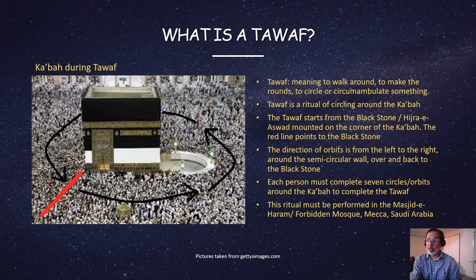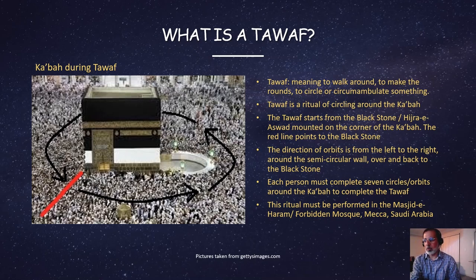The word Tawaf means to walk around or to make the rounds, to circle or circumambulate something. In our context, Tawaf is a ritual of circling around the Kaaba. The Tawaf starts from the Black Stone, Hijra-e-Aswad, mounted on the corner of the Kaaba. The red line points to the Black Stone. The direction of orbits is from the left to the right, around the semicircular wall, over and back to the Black Stone.